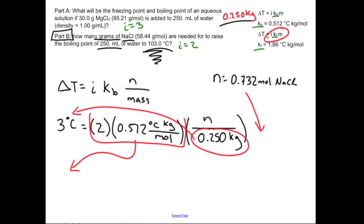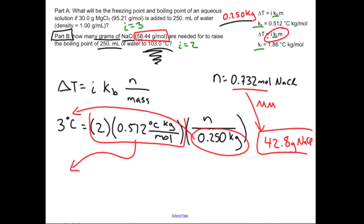Now I just need to use my molar mass conversion factor for sodium chloride, which is 58.44 g/mol. Multiplying 0.732 moles by 58.44 gives my final answer: I need 42.8 grams of sodium chloride.